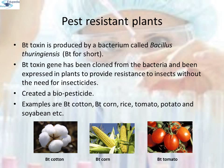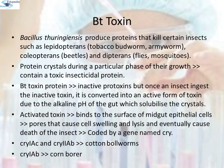Some strains of Bacillus thuringiensis produce proteins that kill certain insects such as lepidopterans like tobacco budworm and armyworm, coleopterans like beetles, and dipterans like flies and mosquitoes. Bacillus thuringiensis forms protein crystals during a particular phase of their growth. These crystals contain a toxic insecticidal protein. The Bt toxin protein exists as inactive protoxins, but once an insect ingests the inactive toxin, it is converted into an active form due to the alkaline pH of the gut, which solubilizes the crystals. The activated toxin binds to the surface of the midgut epithelial cells and creates pores that cause cell swelling and lysis, eventually causing death of the insect.